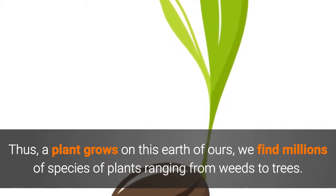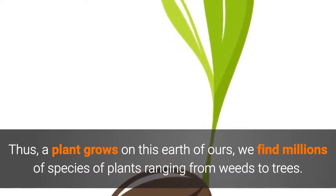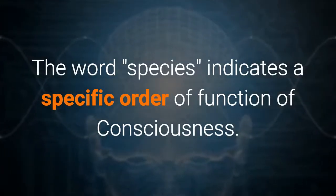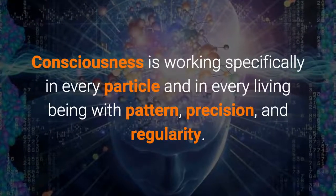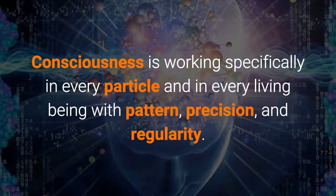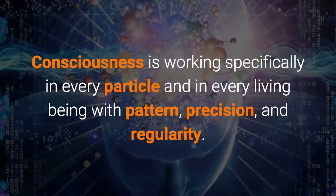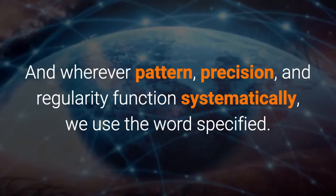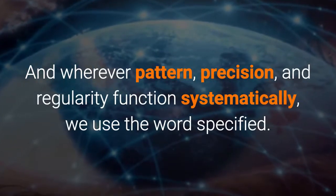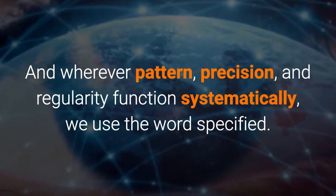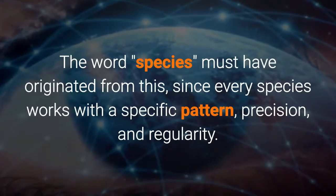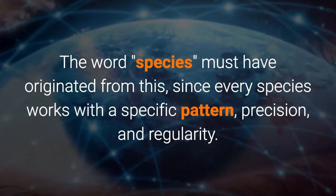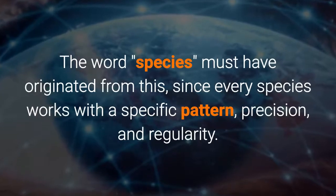We find millions of species of plants ranging from weeds to trees. The word species indicates a specific order of function of consciousness. Consciousness is working specifically in every particle and in every living being with pattern, precision and regularity. And wherever pattern, precision and regularity function systematically, we use the word specified. The word species must have originated from this, since every species works with a specific pattern, precision and regularity.